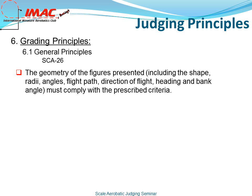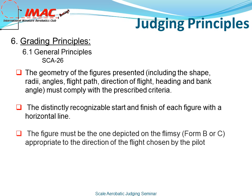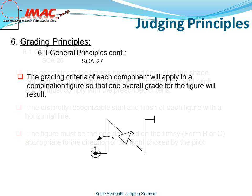Rule 6.1, General Principles, from the rule book, page 26. The geometry of figures presented, including the shape, radii, angles, flight path, direction of flight, heading, and bank angle, must comply with the prescribed criteria. The distinctly recognizable start and finish of each figure within a horizontal line — the figure must be the one depicted on the flimsy, form B or C, appropriate to the direction of flight chosen by the pilot. The grading criteria of each component will apply in a combination figure so that one overall grade for the figure will result.